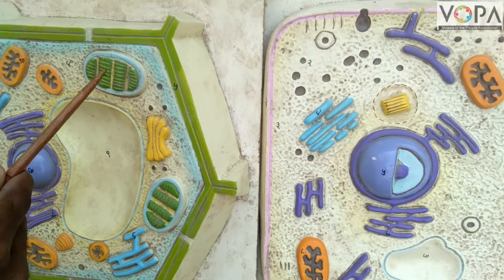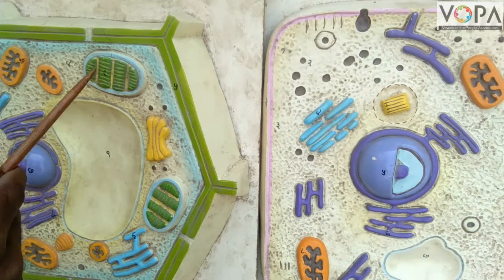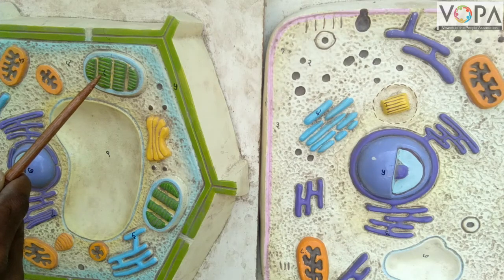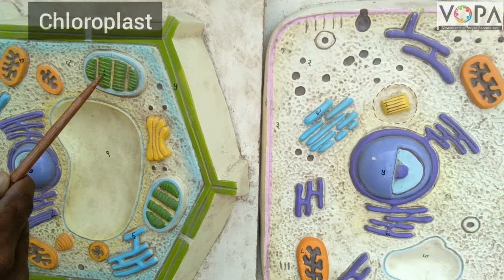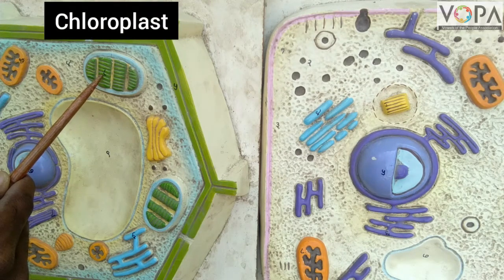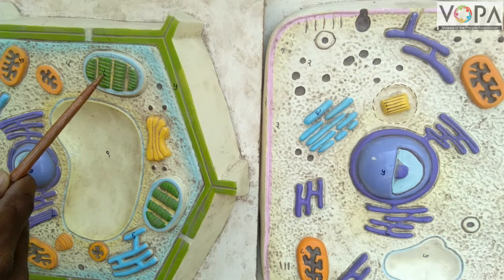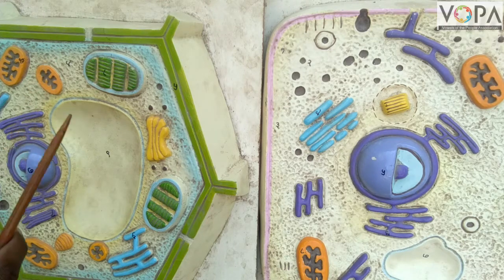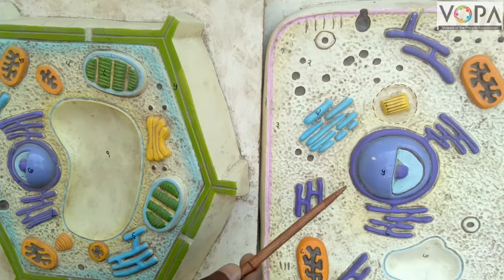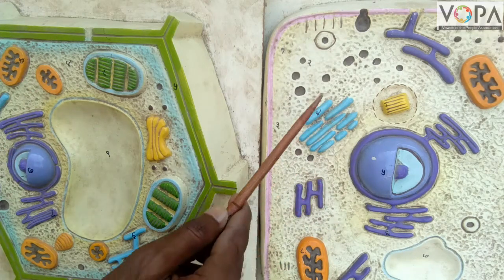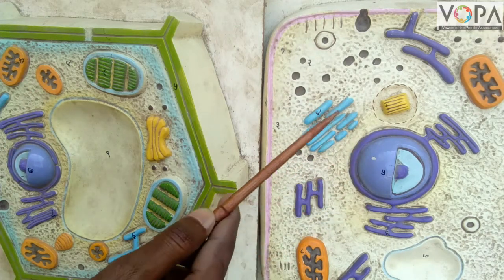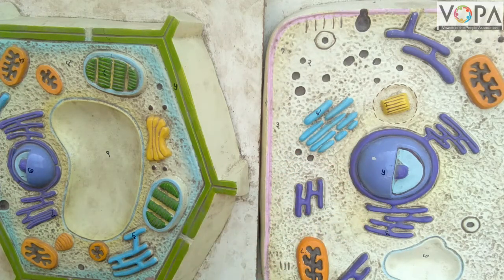This part of the plant cell is called the chloroplast. In the animal cell, the chloroplast is absent.